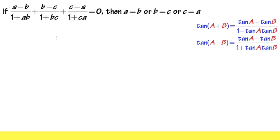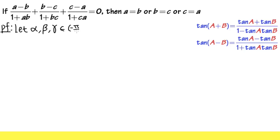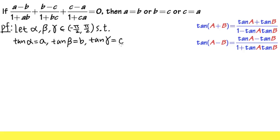My strategy is: since we have an equation with addition, if we can transform it into one where a side is a product, we can argue that one of the factors must equal zero. I'll utilize the tangent formula. Let me introduce three angles alpha, beta, and gamma on the interval from negative pi over 2 to positive pi over 2, such that tangent of alpha equals a, tangent of beta equals b, and tangent of gamma equals c.